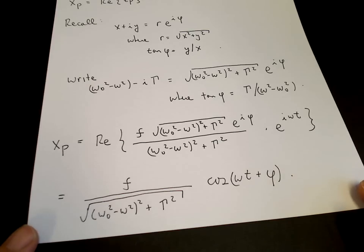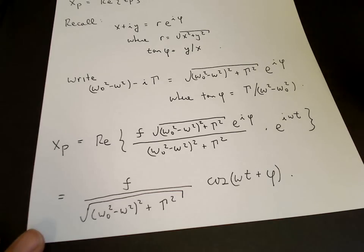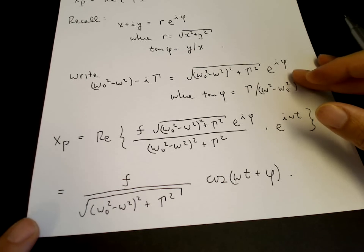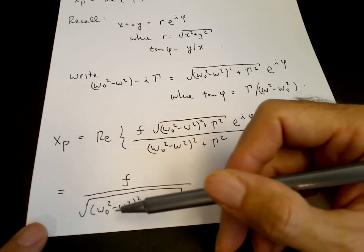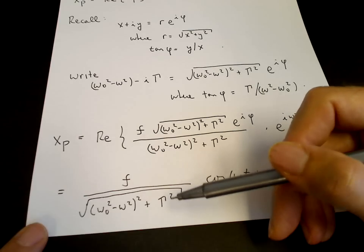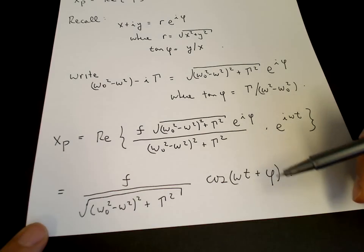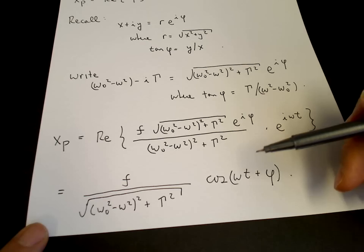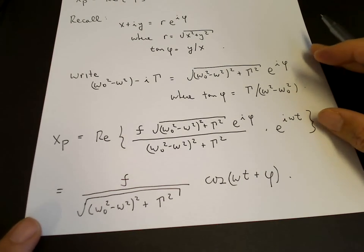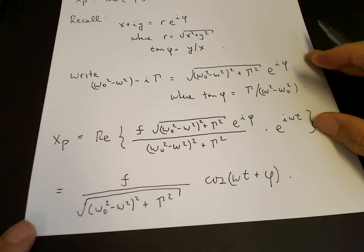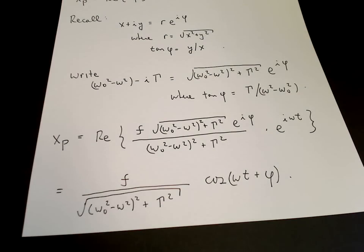That's the form of the particular solution. The final oscillation of the mass under an external force has an amplitude which depends on the frequency of the external force and the damping coefficient, and it has a phase phi. We've calculated both the amplitude and the phase. In a physics class you then look at the implications: what frequency should you force the oscillator at to have maximum amplitude, and how does the phase of the motion shift with respect to the force?